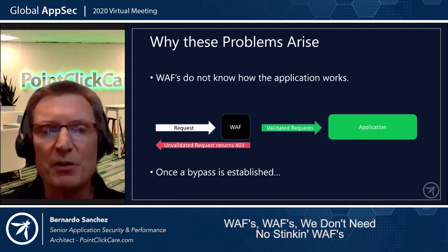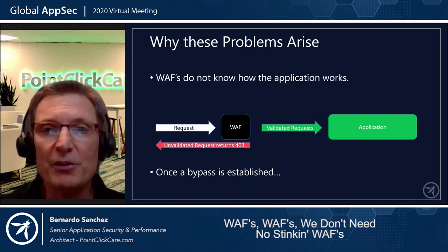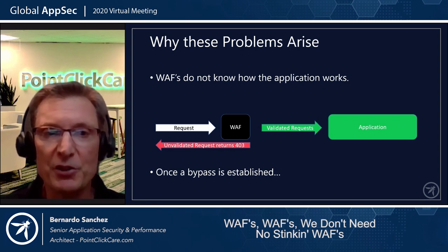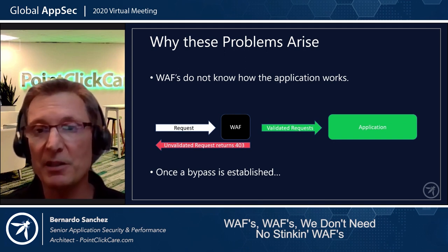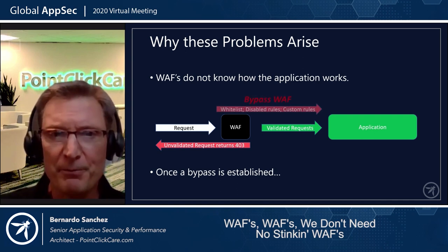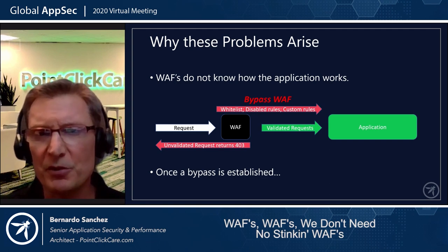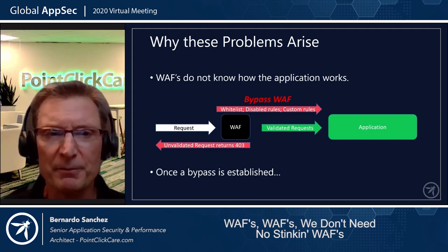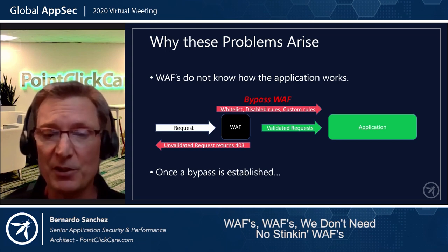Why do these problems arise? WAFs don't actually know how your application works. If you have any whitelists, disabled rules, or custom rules, you're really bypassing the WAF itself. And everyone knows: once a bypass is established, that hole is very hard to close in the future.